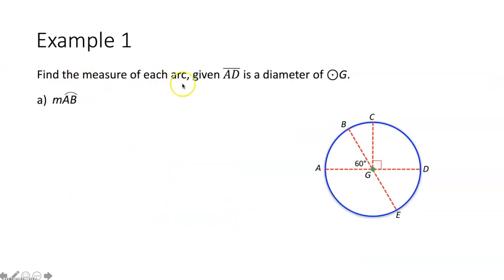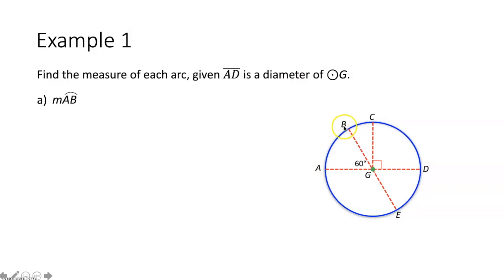Example 1 says find the measure of each arc, given segment AD is a diameter of circle G. The first thing to find is the measure of arc AB. Note that the measure of an arc and the length of an arc are two separate things. The length of an arc is a portion of the circumference, whereas the measure of the arc is equal to the measure of the central angle that makes up that arc. So the measure of arc AB equals the measure of central angle AGB, which is 60 degrees. Therefore, the measure of arc AB is also 60 degrees.